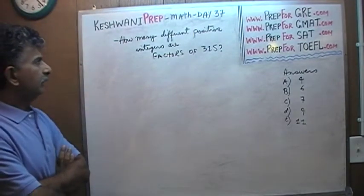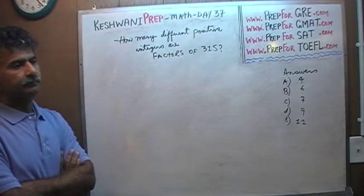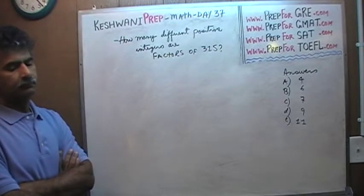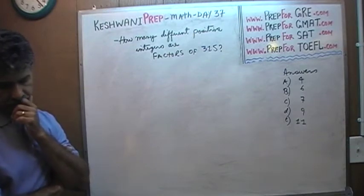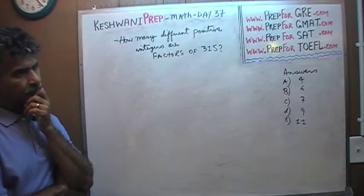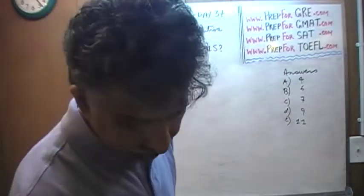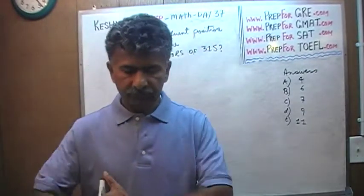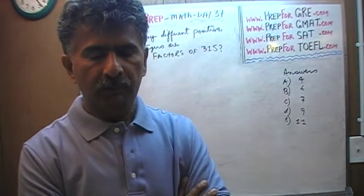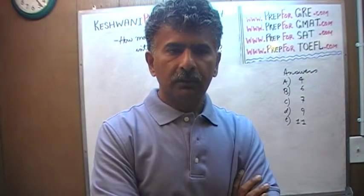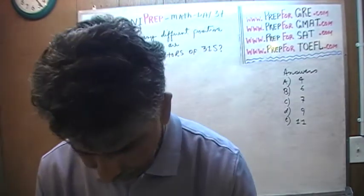How many different positive integers are factors of 315? The key here is to make sure that you go systematically. You must go systematically, logically, in some sort of a defined manner. If you do not go systematically, you are going to get lost, you are going to muck it up.